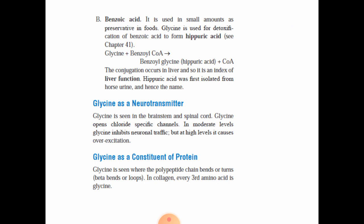In another conjugation reaction, glycine is involved in detoxification of benzoic acid. Benzoic acid is used in small amounts as a preservative in foods. Glycine detoxifies benzoic acid by forming hippuric acid — glycine plus benzoyl-CoA forms benzoylglycine (hippuric acid). This conjugation occurs in the liver, making it an index of liver function. Hippuric acid was first isolated from horse urine, hence the name.